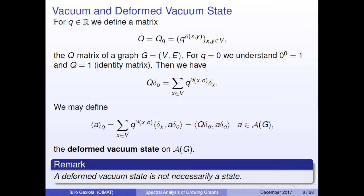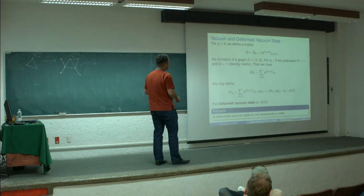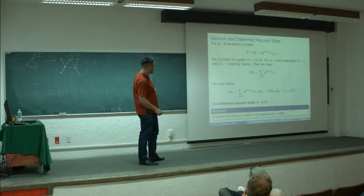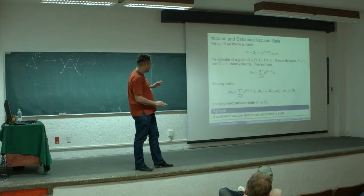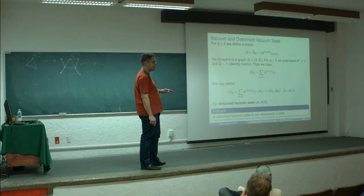We can define another state called the deformed vacuum state. We associate a matrix with the graph: we fix a parameter q and define a Q matrix where each entry equals q raised to the distance between x and y, where the distance is the length of the minimum walk from x to y. Under this definition we define the deformed vacuum state. Note that the deformed vacuum state is not always positive, so it is not necessarily a state — we need to establish conditions under which it qualifies as a state.